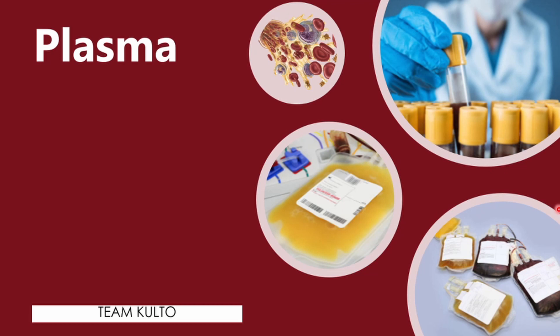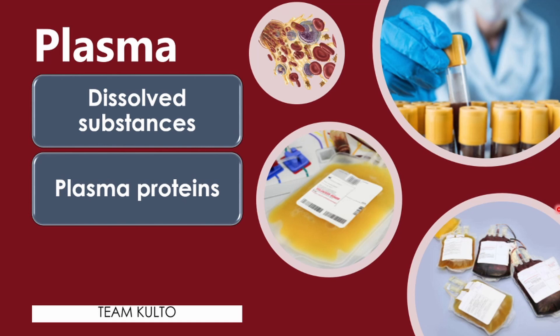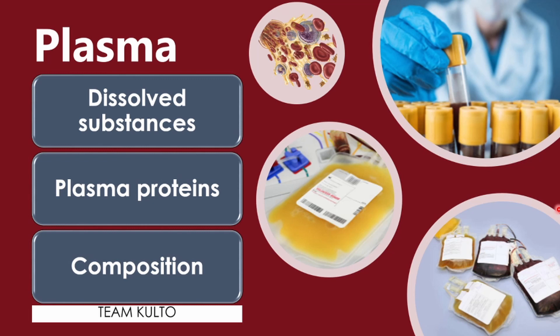When we talk about plasma, this is approximately 90 percent water — plasma is the liquid part of the blood. Dissolved substances include nutrients, salts, electrolytes, respiratory gases, hormones, plasma proteins, and various wastes and products of cell metabolism. Plasma proteins are the most abundant solutes in plasma. Except for antibodies and protein-based hormones, most plasma proteins are made by the liver.